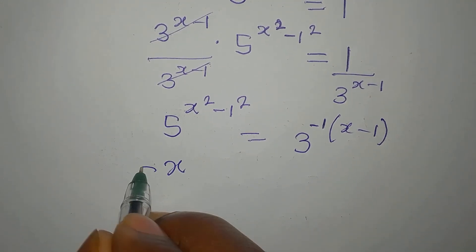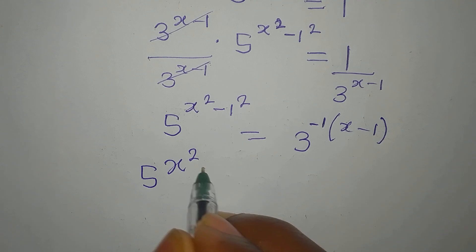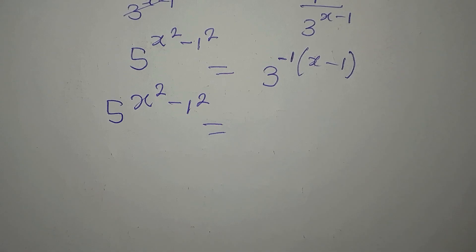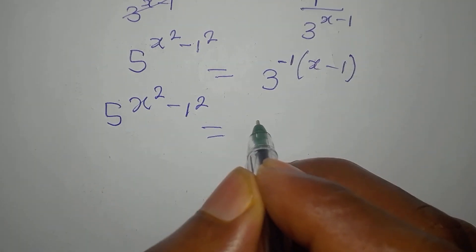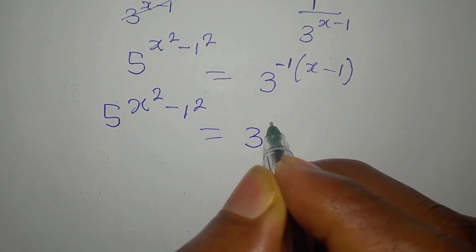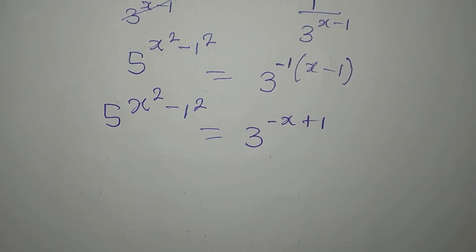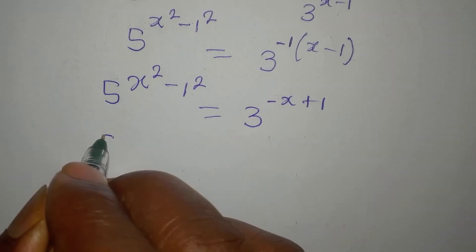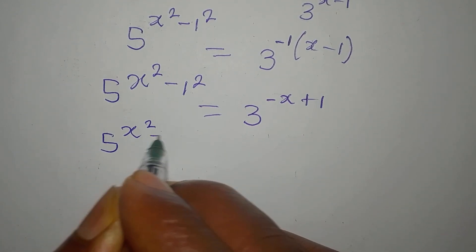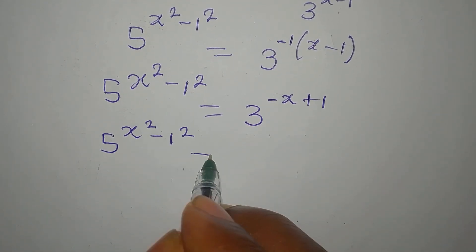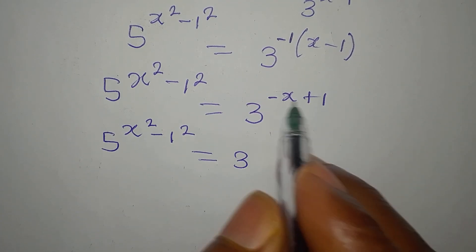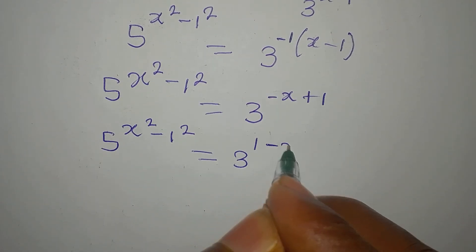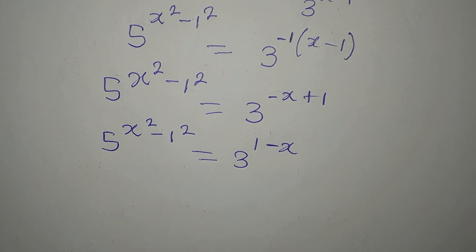So 5 to the power of (x² - 1)² will now be equal to 3 to the power of negative x plus 1, because the negative is multiplying everything. Since this is positive, I can write that first and write minus x after: 3 to the power of 1 minus x.